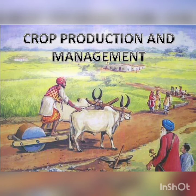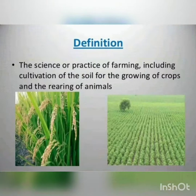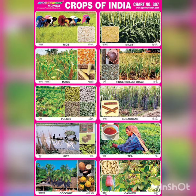Welcome, children. Today we are going to learn about food production and management from plants. India is an agriculture-dependent country and depending on the agriculture the farmers perform, we get our food. Most food products are obtained from plants. Plants which are grown in large numbers to get useful food products are known as crops, and the process of cultivation of crops on a large scale is called agriculture. In India, farmers grow a variety of crops like rice, wheat, jowar, bajra, pulses, and sugarcane.